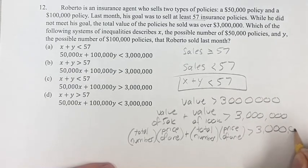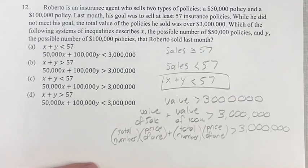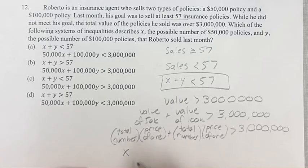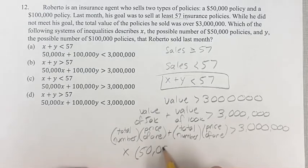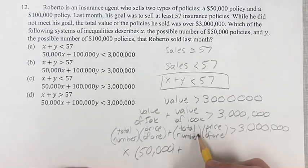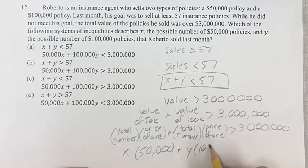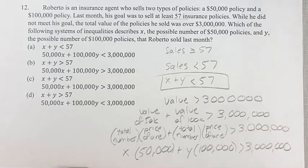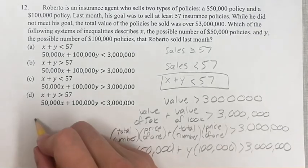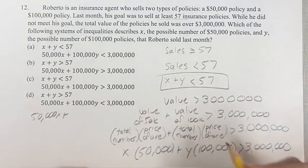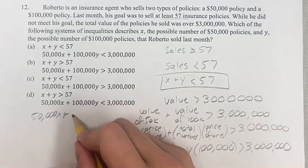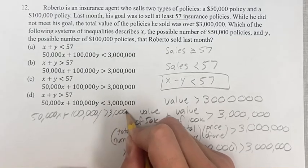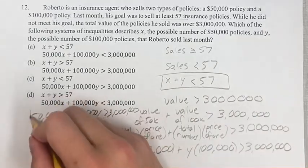Same thing here, except we're dealing with much bigger numbers. The total number of $50,000 policies is x, times the price of one which is $50,000. The number of $100,000 policies is y, and the price is just in the name. So we have x times $50,000, which is $50,000x, plus y times $100,000, which is $100,000y, and this is greater than $3 million. That's our second inequality.